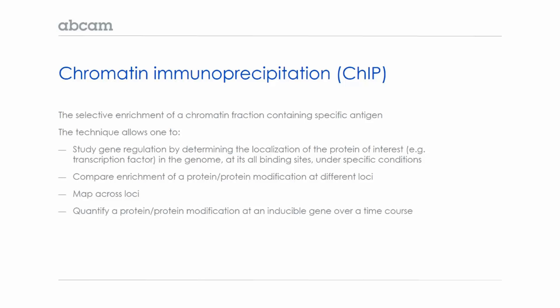ChIP allows you to study gene regulation by determining the localization of a protein of interest, for instance a transcription factor, in the genome at all of its binding sites and under specific conditions, such as different disease states or treatments.